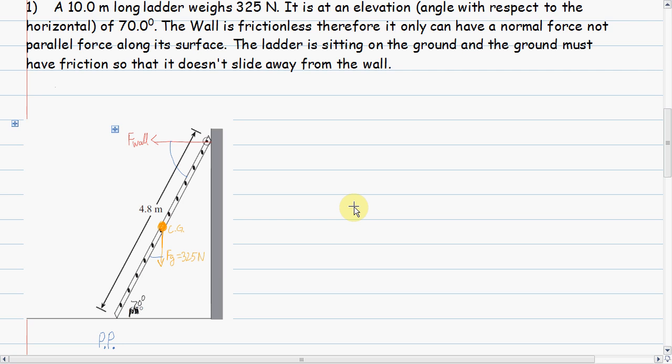A 10 meter long ladder weighs 325 newtons. It is at an angle or elevation angle of 70 degrees, and that's with respect to the horizontal. The wall is frictionless, therefore it can only have a normal force, not a parallel force, along its surface. The ladder is sitting on the ground, and the ground must have friction so that it doesn't slide away from the wall.